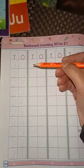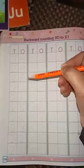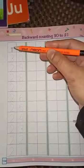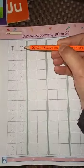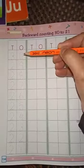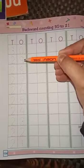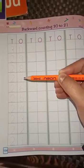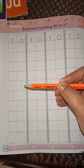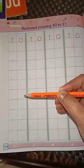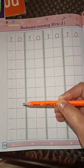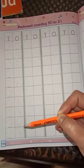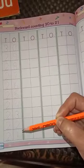In backward counting we go from a bigger number to a smaller number. So let's start. Tens. Ones. 30, 29, 28, 27, 26, 25, 24, 23, 22, 21.